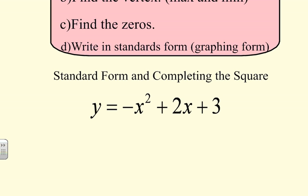To find the vertex, we find x as the opposite of b over 2a. Taking the opposite of b, which is negative 2, over 2 times negative 1, we get x equals positive 1.